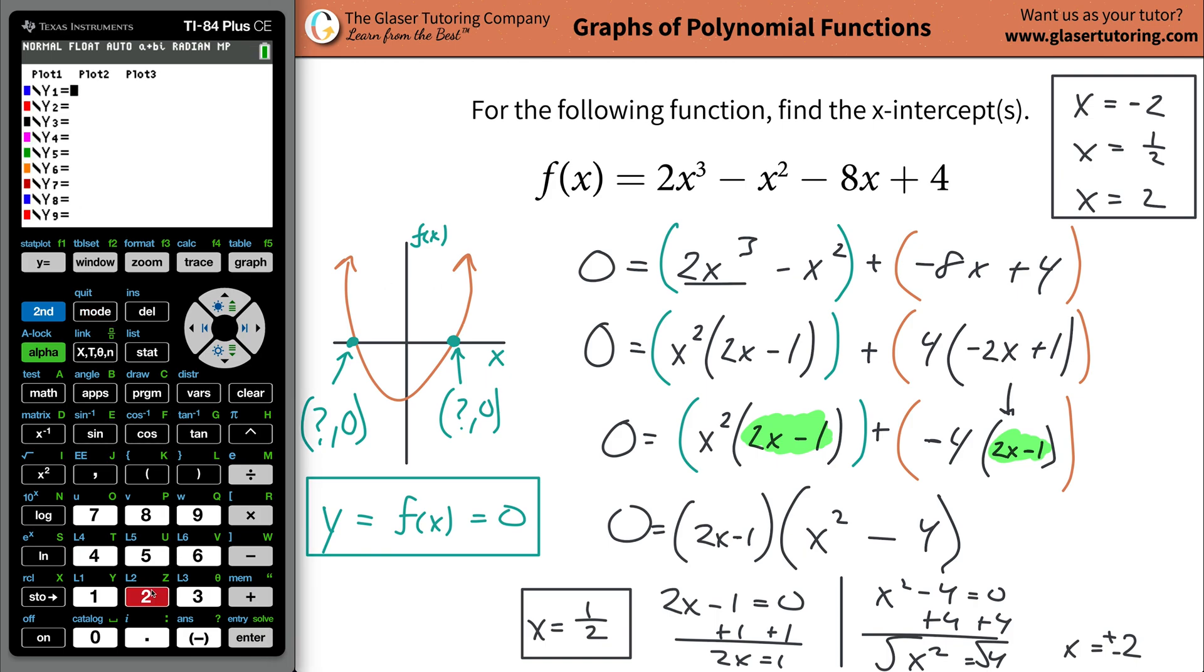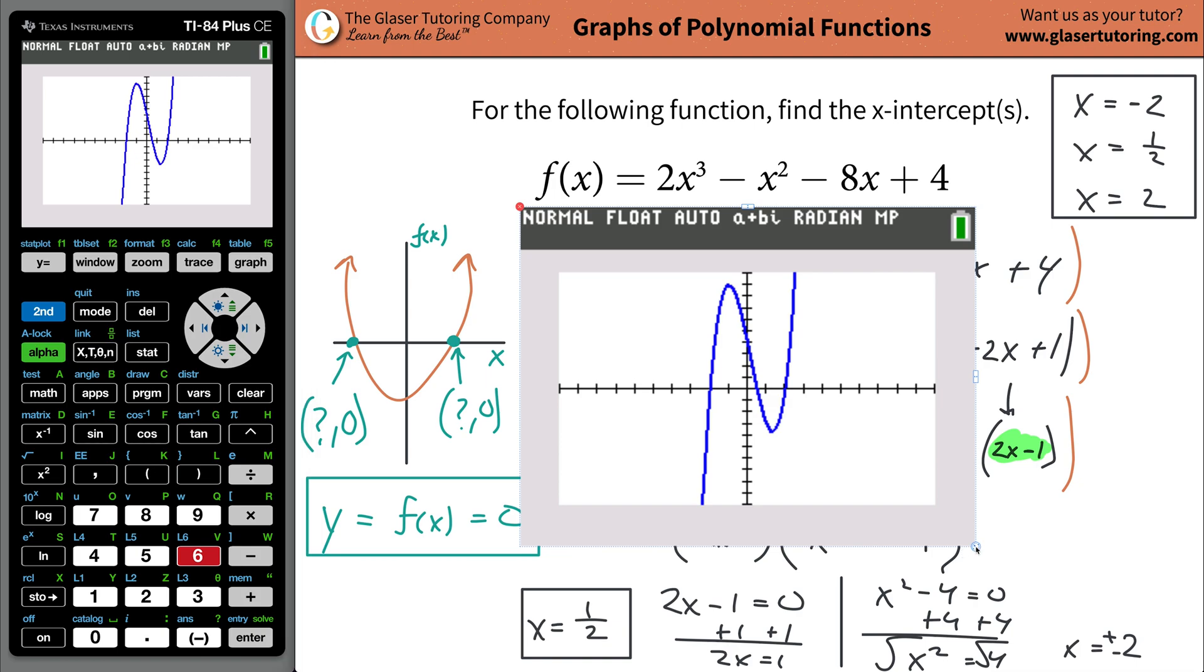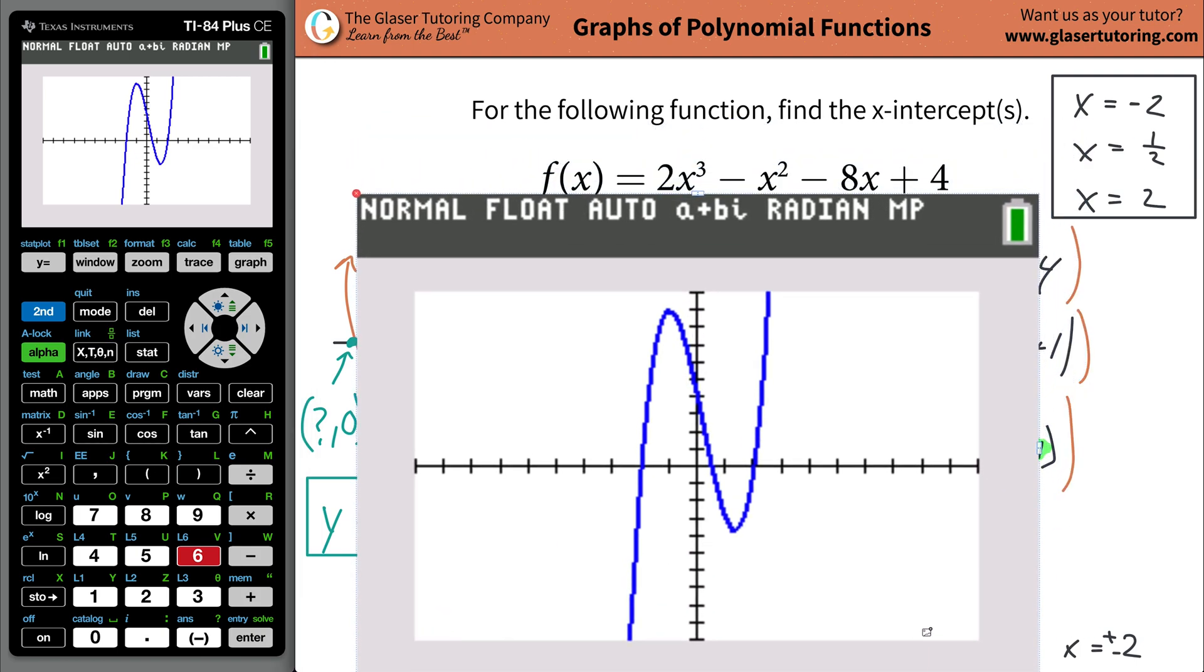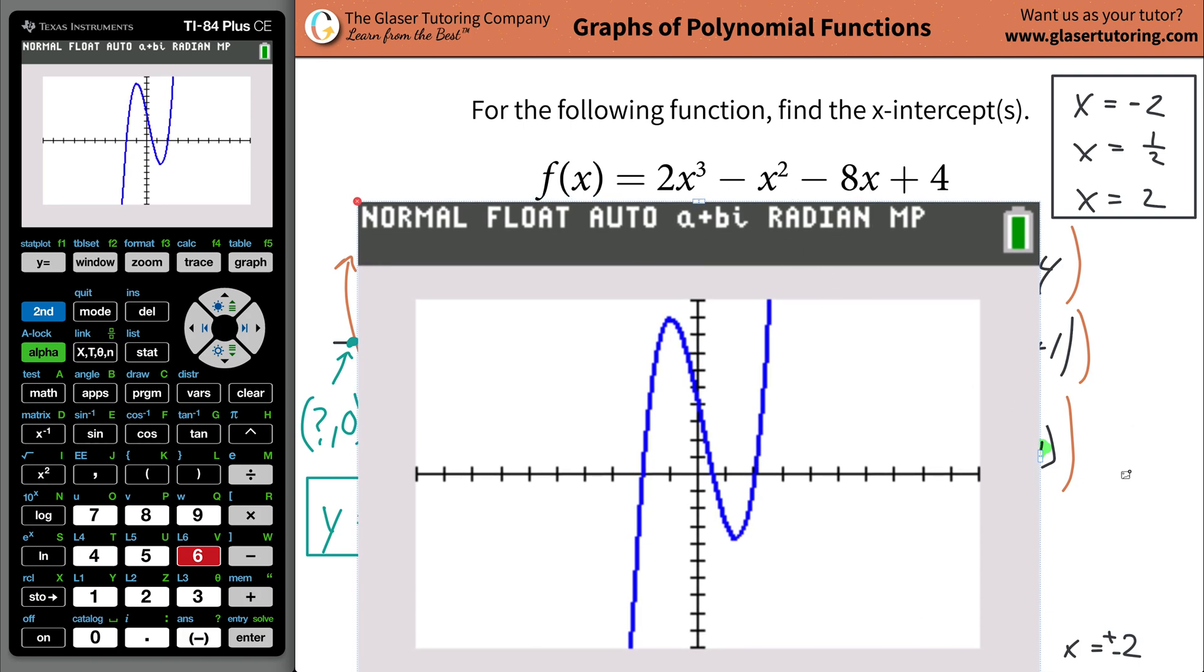Plug in your function 2x raised to the three, hit the over button minus then x², minus 8x plus 4. Now I'm going to go to zoom standard, zoom, then 6, and you're going to get a graph. Look at this. Let's bring it in. This is what the math function up here looks like. If you had to plot all the points, if you could plot all the points for x and their corresponding y values, this is the beautiful picture that comes about.